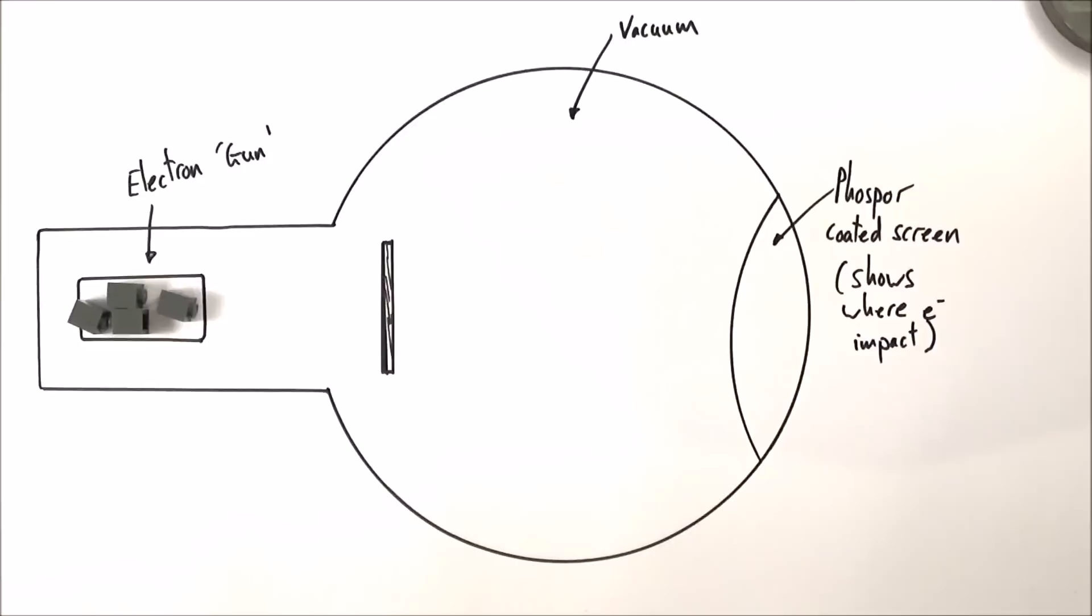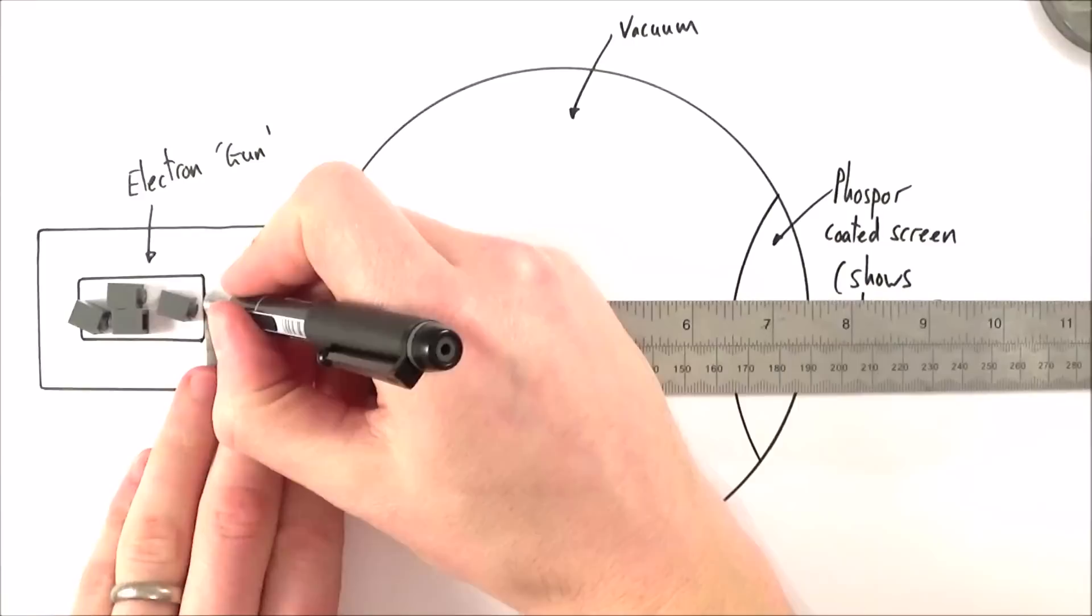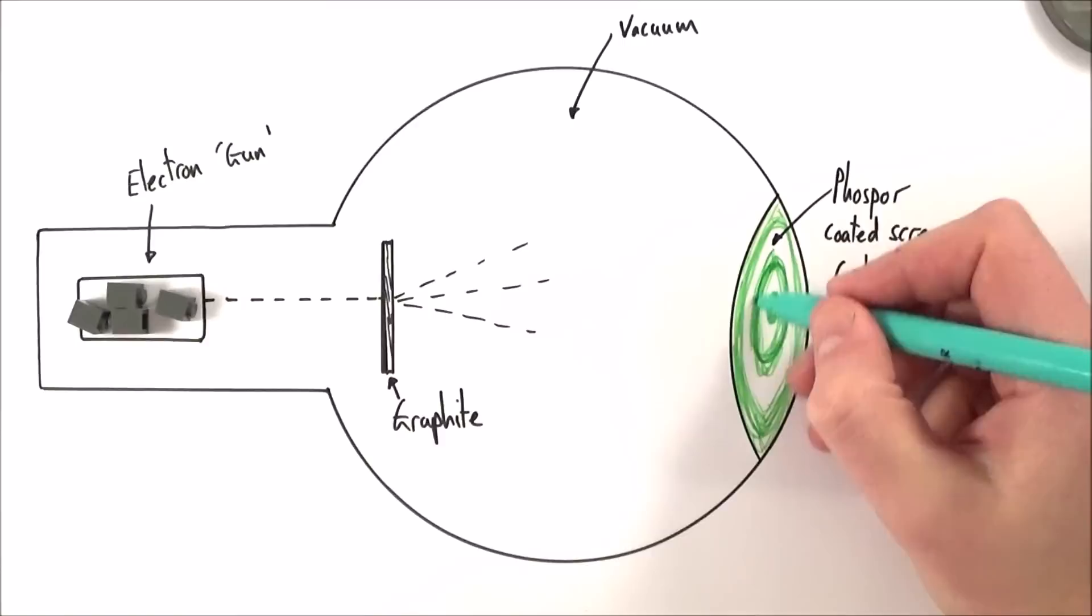And by firing it through a small piece of graphite, or a small piece of nickel I think they used as well, they could actually use this piece of metal as a diffraction grating. The space between the atoms was so small that it was about the same as a wavelength of the electrons which were going through it. And what they found is that rather than the electrons just going straight through, they found that the electrons interfered with themselves and they formed a diffraction pattern on the end of the tube.